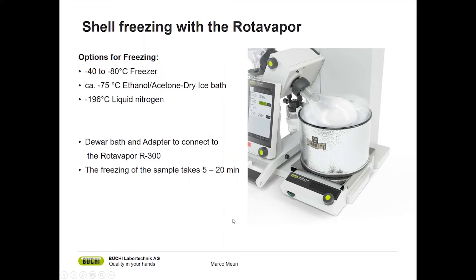What are the options you can use for freezing? You can use a freezer as mentioned before, and I would recommend going to minus 40 at least or minus 80 would be even nicer. Then you can use a cool bath with ethanol or acetone and dry ice that goes to about minus 75 degrees to freeze your samples. And of course you can also use liquid nitrogen that goes down to minus 196 degrees.